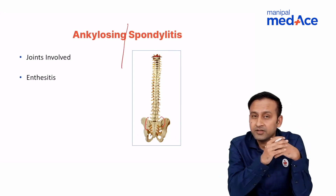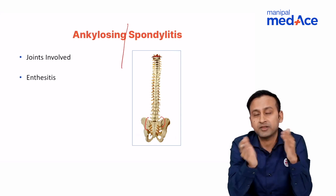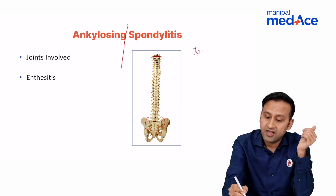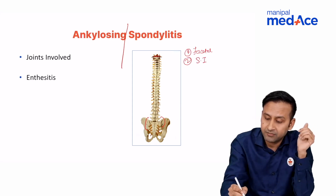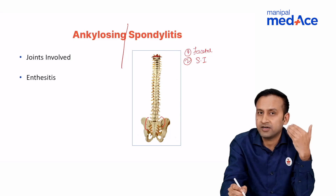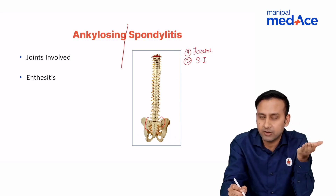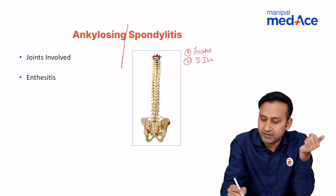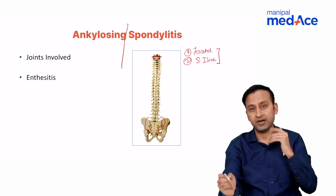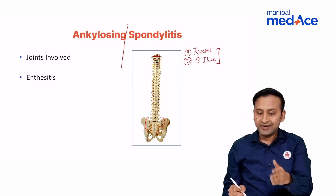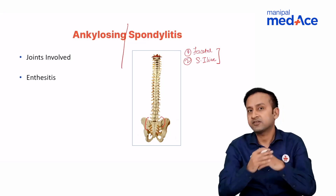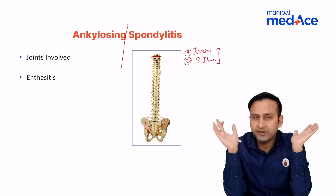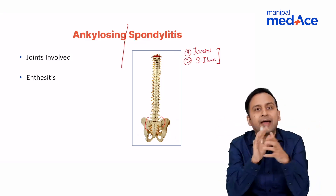Within the vertebra, the joints that join the vertebrae are the facetal joints. The most important joint joining the sacral vertebra to the iliac plate is the SI joint. 'Ankylosing' means fusion — the end product of all inflammatory arthritis is fusion or ankylosis, just as in TB it is fibrosis, in bones it is ankylosis.